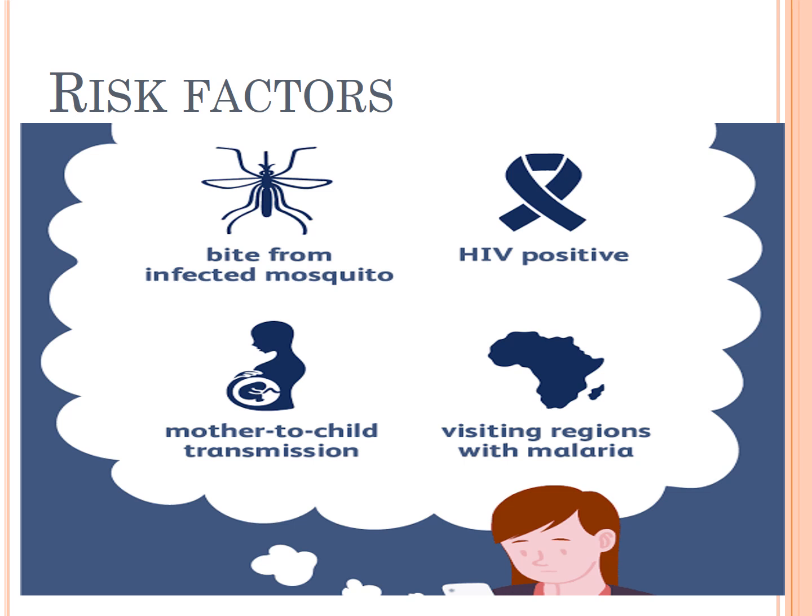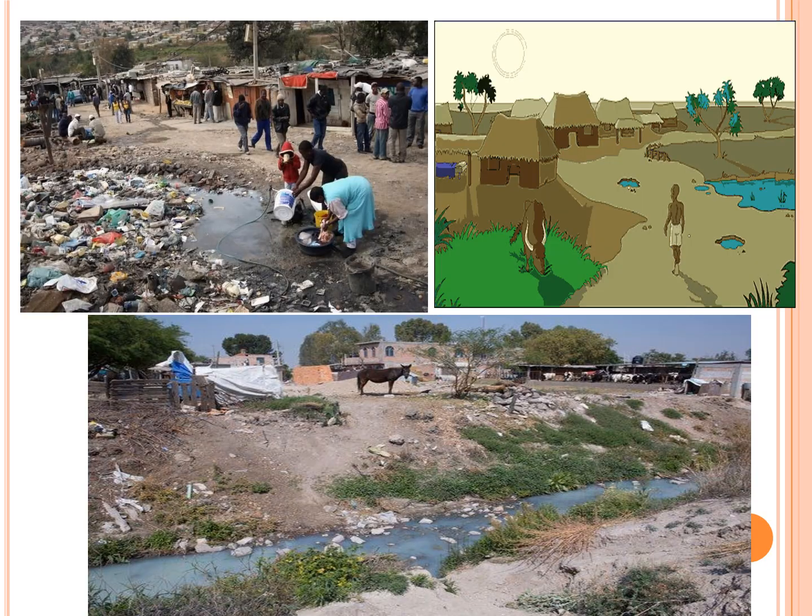Risk factors include bites from infected mosquitoes, HIV-positive mother-to-child transmission, and visiting regions with malaria. Contaminated water, unhygienic places, and overcrowded environments are shown here, where malaria parasites can be found.